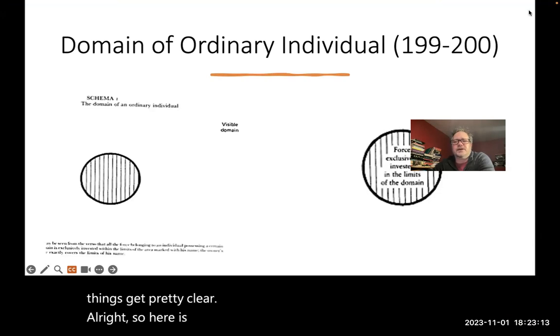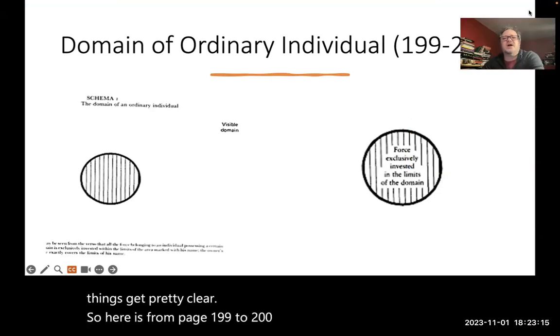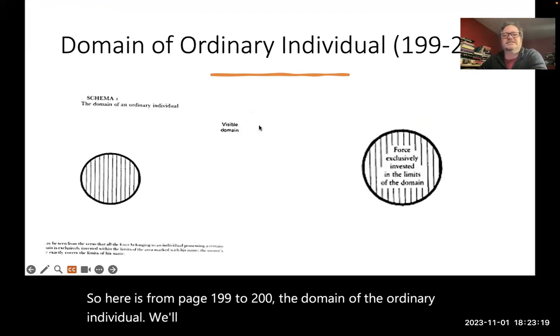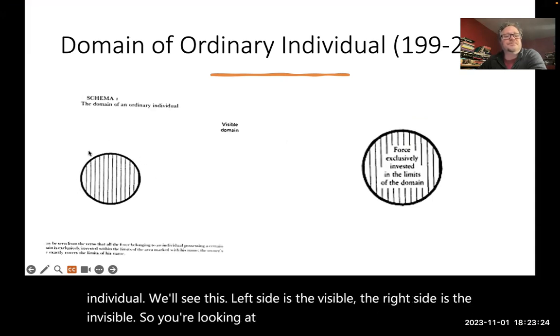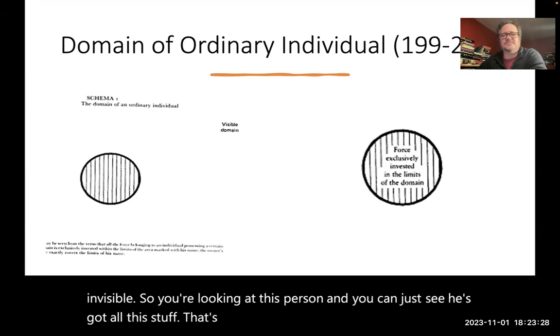So here is from page 199 to 200, the domain of the ordinary individual. We'll see this left side is the visible, the right side is the invisible. So you're looking at this person and you can just see he's got all this stuff. That's where he lives. That's him on his farm.